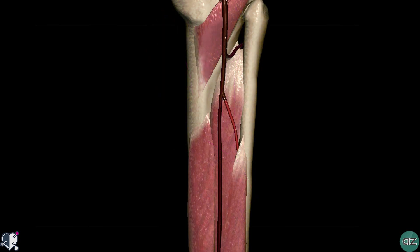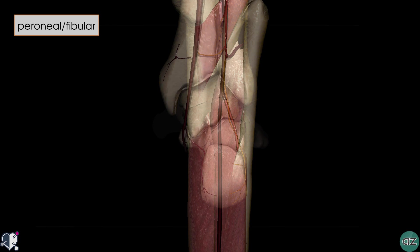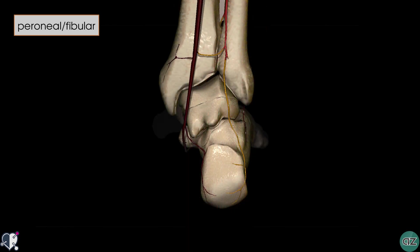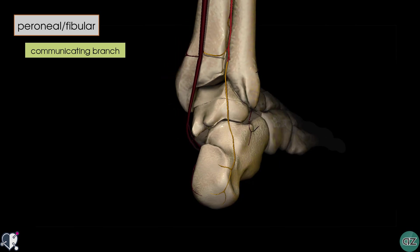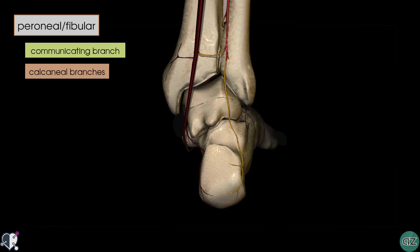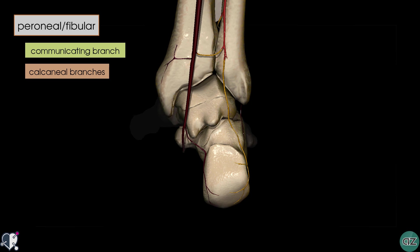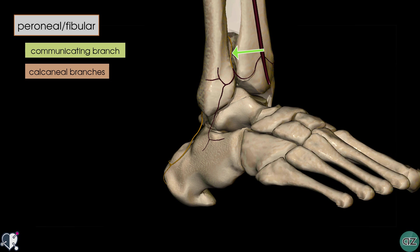The last artery to discuss is the fibular artery or the peroneal artery. The tibiofibular trunk divides into the posterior tibial and the fibular artery, or as some texts describe it, the posterior tibial artery gives off the fibular artery. Looking at its distal branches, the fibular artery gives off a communicating branch which anastomoses with the communicating branch of the posterior tibial, a calcaneal branch, and branches which anastomose with the anterior tibial branches. Rotating the model anteriorly, you can see these branches anastomosing with the malleolar branches of the anterior tibial artery.